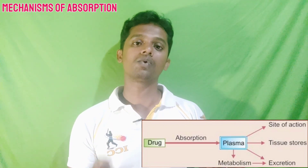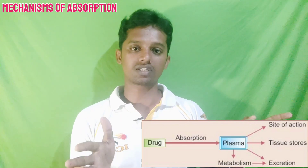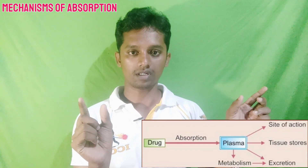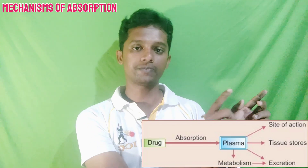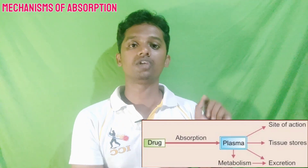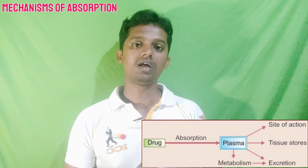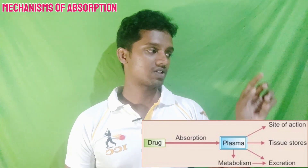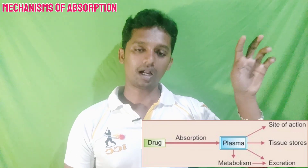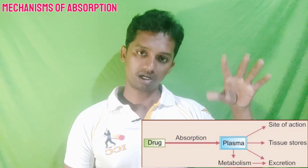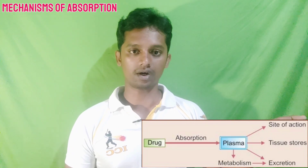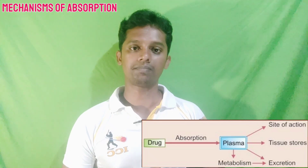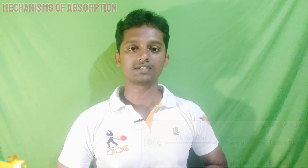When you administer the drug and it is able to reach the blood circulation, it is called absorption. The drug reaches the plasma, then moves to the site of action, undergoes metabolism, and finally is excreted. So absorption is a great rate-limiting step in drug effects.